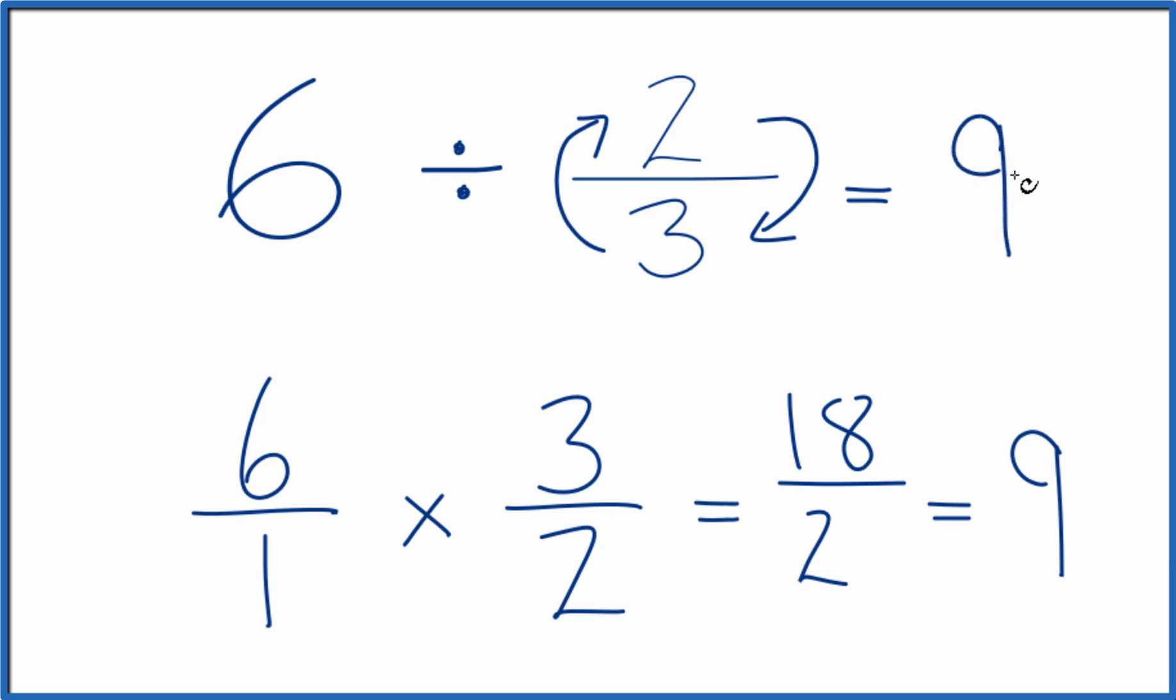And if you multiply 9 times 2 thirds, you'll get 6. This is Dr. B, dividing 6 by 2 thirds. Thanks for watching.